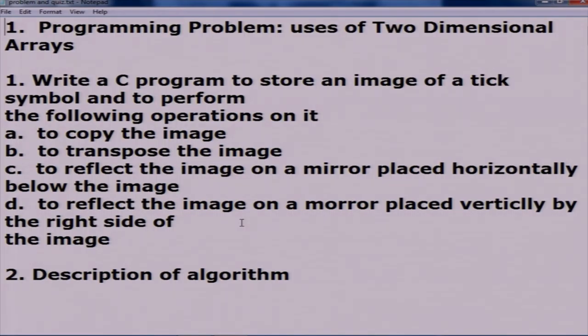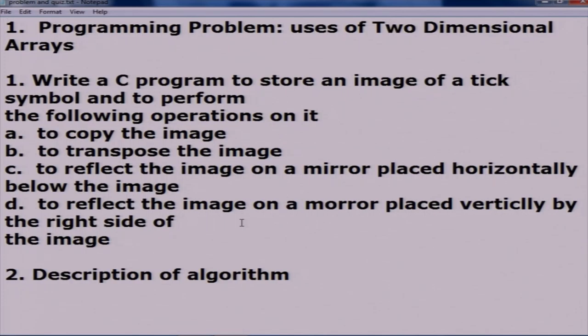May I request the next group. Dear friends, our problem is called uses of two-dimensional arrays. Thank you to my five group members and Professor Patak for this great opportunity. We selected an image processing problem: write a C program to store an image. The image is stored not as a bitmap but as a binary map — zeros and ones represent a matrix. We created an image of a tick mark and implemented: copy the image, transpose the image, reflect on a horizontal mirror below, and reflect on a vertical mirror to the right.